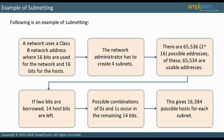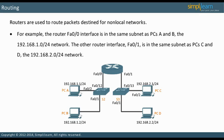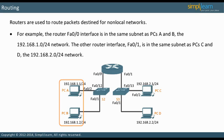Let us look at some examples with Class C addresses. In this topology, data exchanged between PCA and PCB is handled by the switch. Likewise, data exchanged between PCC and PCD is handled by the switch. A router is required to route packets between PCs on the left and PCs on the right. The router FA00 interface is in the same subnet as PCs A and B — the 192.168.1.0/24 network. The other router interface, FA01, is in the same subnet as PCs C and D — the 192.168.2.0/24 network. Each router interface is in a different subnet.